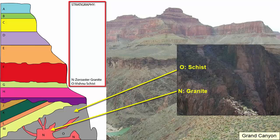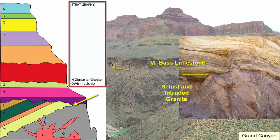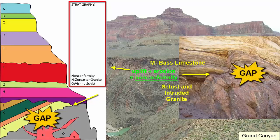With the first two events at the base of our stratigraphy determined, we next see an irregular contact between the schist and granite and the Bass Limestone, M, which sits above. Since granites and schists form deep underground while limestones form at the surface, we label this contact as a nonconformity — meaning many layers existed above the schist and granite when they formed, but those layers have since been removed through erosion, potentially over many millions of years. After erosion stops and the area is eroded flat, deposition resumes and M is laid down, followed by L, K, and J.